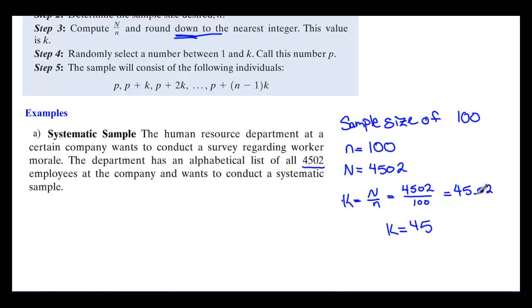To figure out k, we take big N over little n: 4,502 divided by 100, which gives us 45.02. We round down to the nearest integer, so k equals 45. Note that even if the decimal had been 45.7, we would still round down to 45.